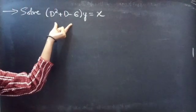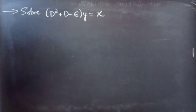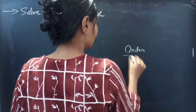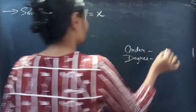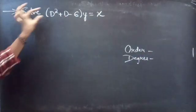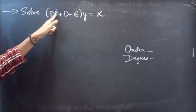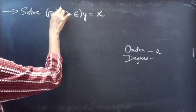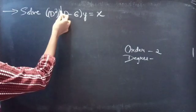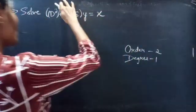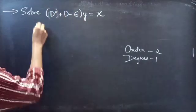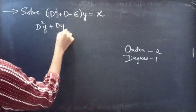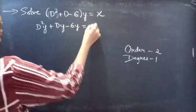Problem: solve (D² + D − 6)y = 2x. Firstly, let's find the order and degree of the given differential equation. Identify the highest derivative here — D² is the highest derivative, so our order will be 2, and the highest power of the highest derivative — that is the degree — is 1. I'll write the given differential equation as D²y + Dy − 6y = x.